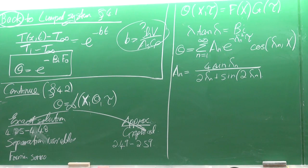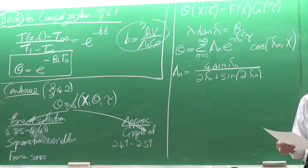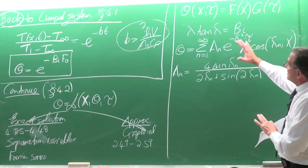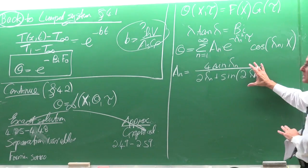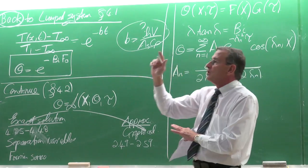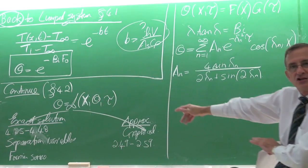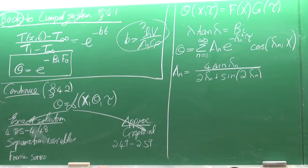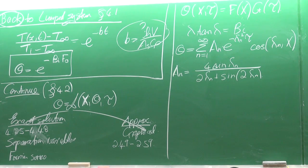The solution looks complicated, but these are the most important steps giving a solution for the large plane wall only — not for the cylinder and sphere. Those derivations are not in the textbook. However, all the results are summarized in table 4.1 in your textbook.